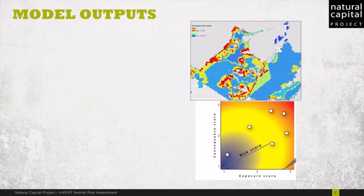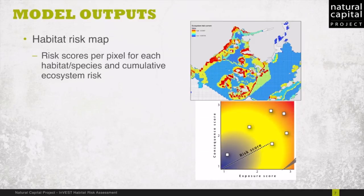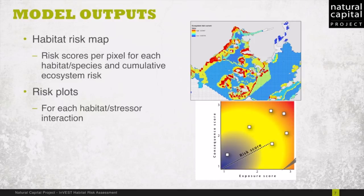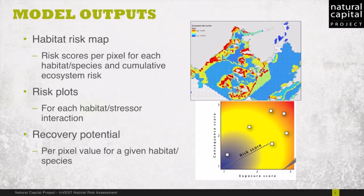We have three main types of model outputs. First, we have habitat risk maps. This shows risk scores per pixel for each habitat or species, as well as a cumulative ecosystem risk. Next, we have risk plots, which graphically illustrate the risk score for each habitat-stressor interaction in the exposure-consequence space. Finally, we have a map of the recovery potential, which shows per-pixel values for the recovery potential for a given habitat or species.